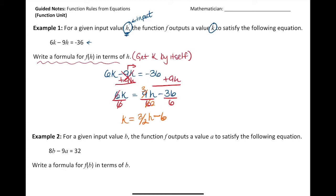Let's write it in proper functional notation. The proper form is going to be f(h). We're not going to write k, we're going to write f(h), because f(h) is essentially k. So f(h) = 3/2 h - 6.